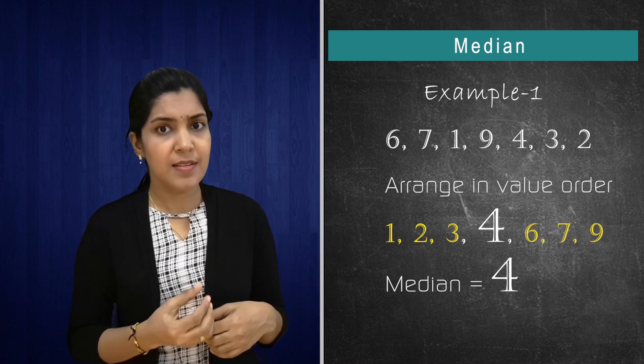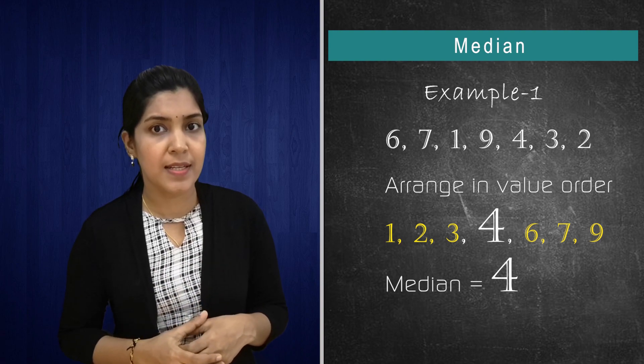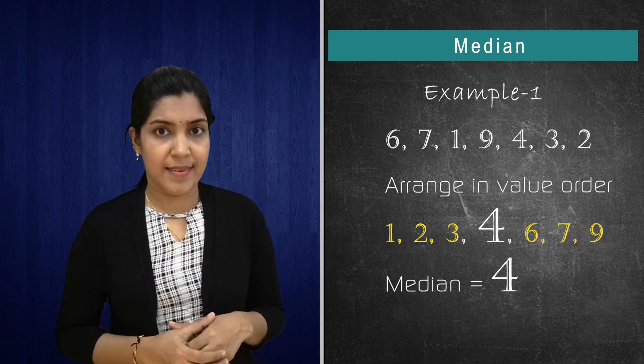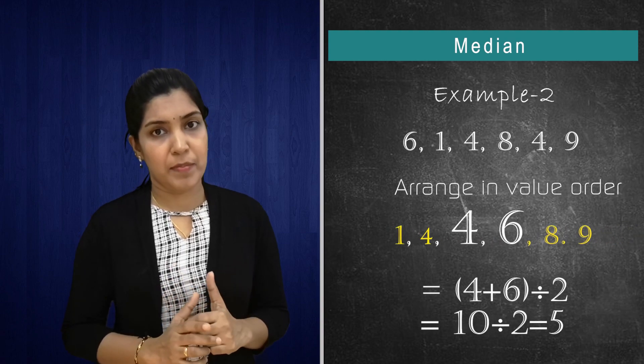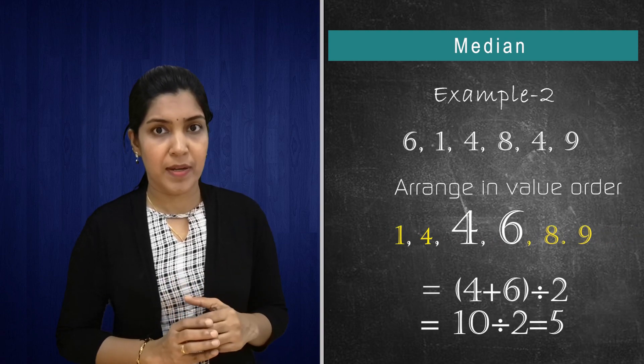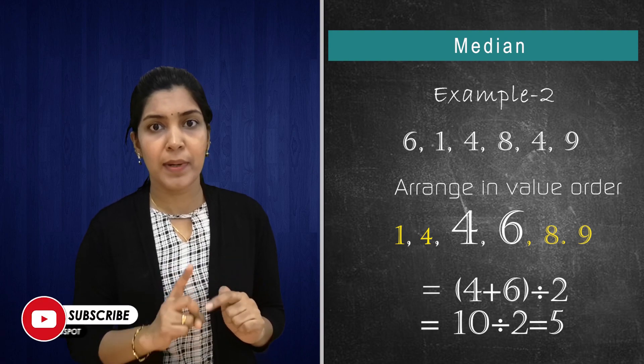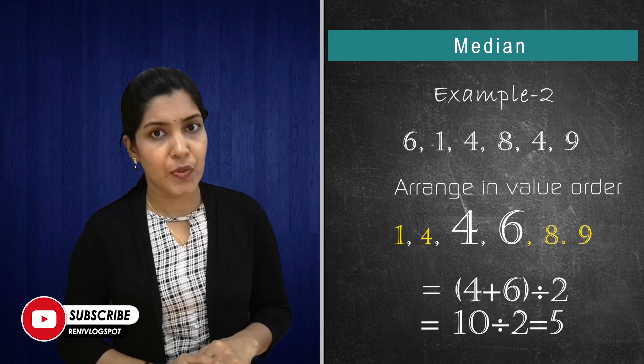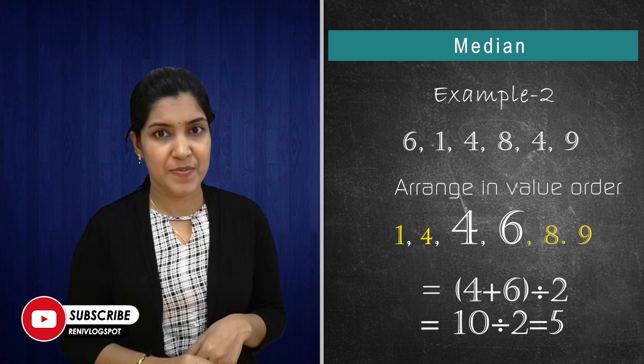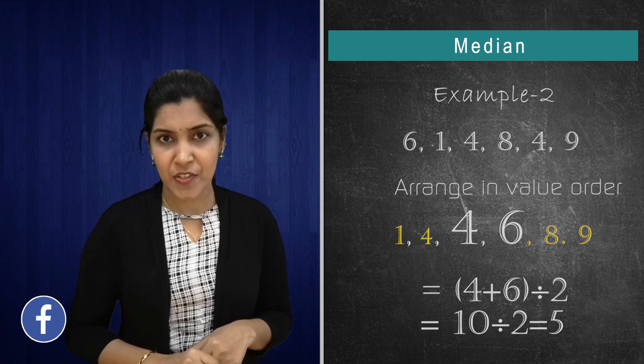If it is an odd number series, the exact middle number is the median. And if it is an even number, even sets of numbers, you have to take the middle two numbers, then add the two numbers and divide by two. You will get the median. Hope you understood.